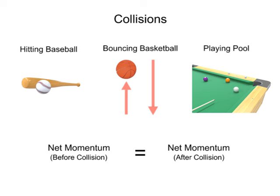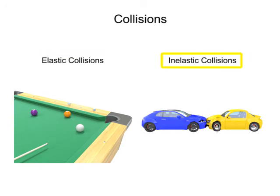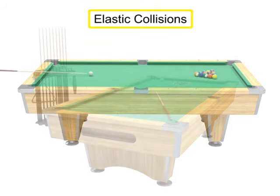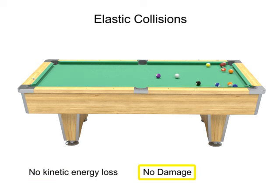There are two types of collisions: elastic collisions and inelastic collisions. An elastic collision is defined as one in which no kinetic energy is lost, no damage is done to the objects involved, and there is no generation of heat.